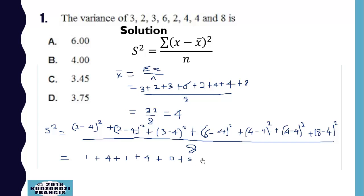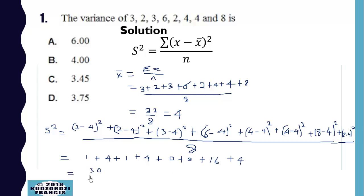Plus zero plus zero, and we still have (2 minus 4) squared, which gives plus 4, plus 16, plus 4. So this is 30 over 8, and this gives us 3.75.